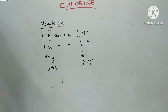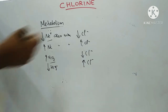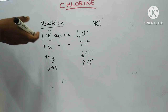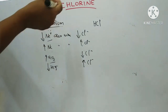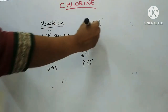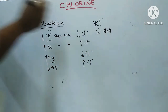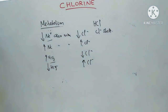Coming to the functions of chlorine or chloride: it is important in the production of HCl in gastric juice, and it is important in the chloride shift. This is about chlorine. Thank you for watching.